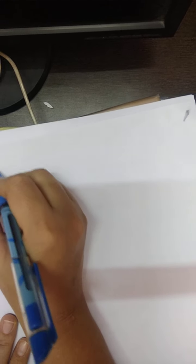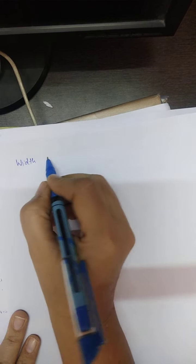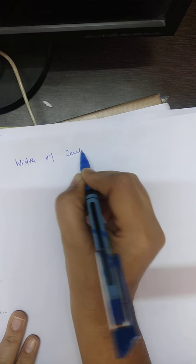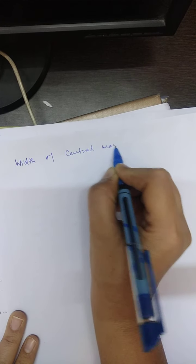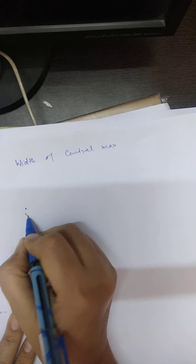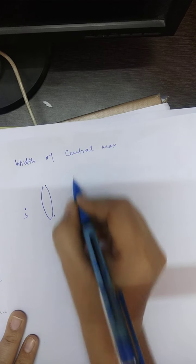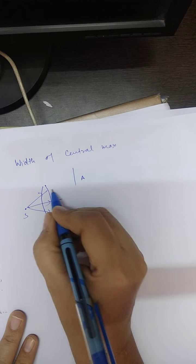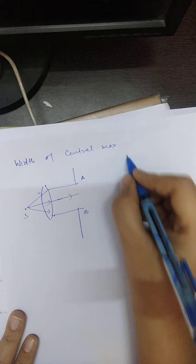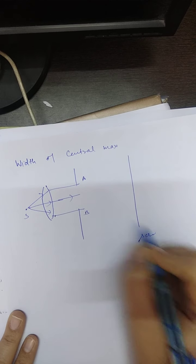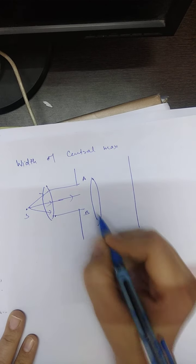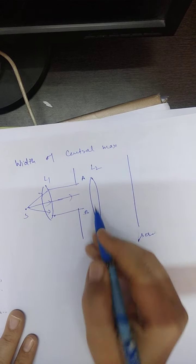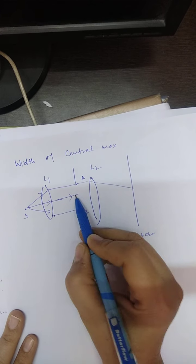The next topic is width of central maxima. Looking at this setup: the slit AB is on the screen, lens L1 and lens L2 are placed in the plane, and light is incident on the screen. At the center, the first bright band is formed.